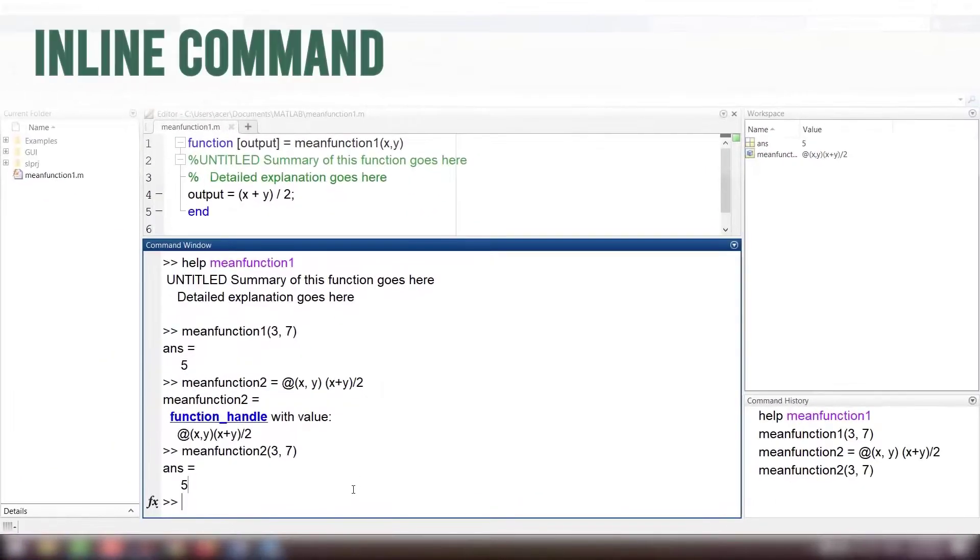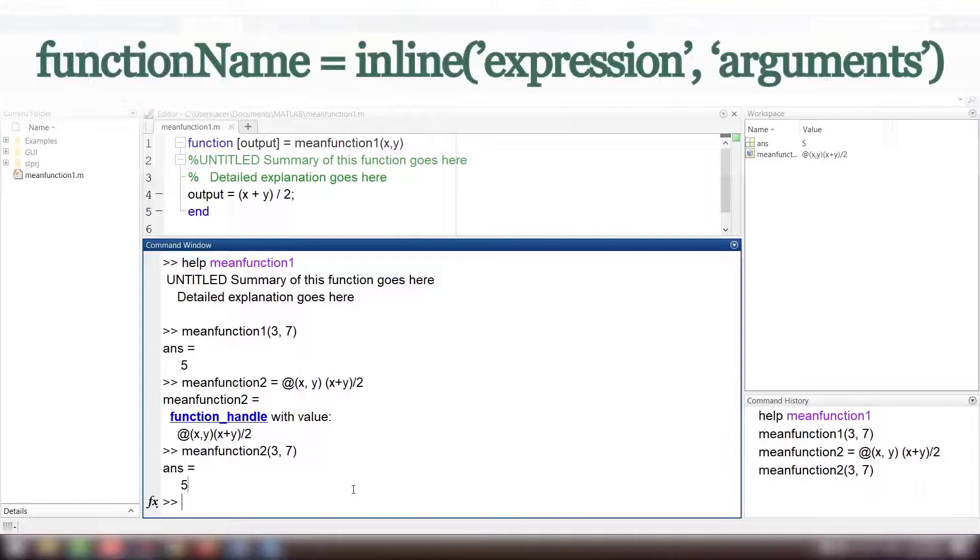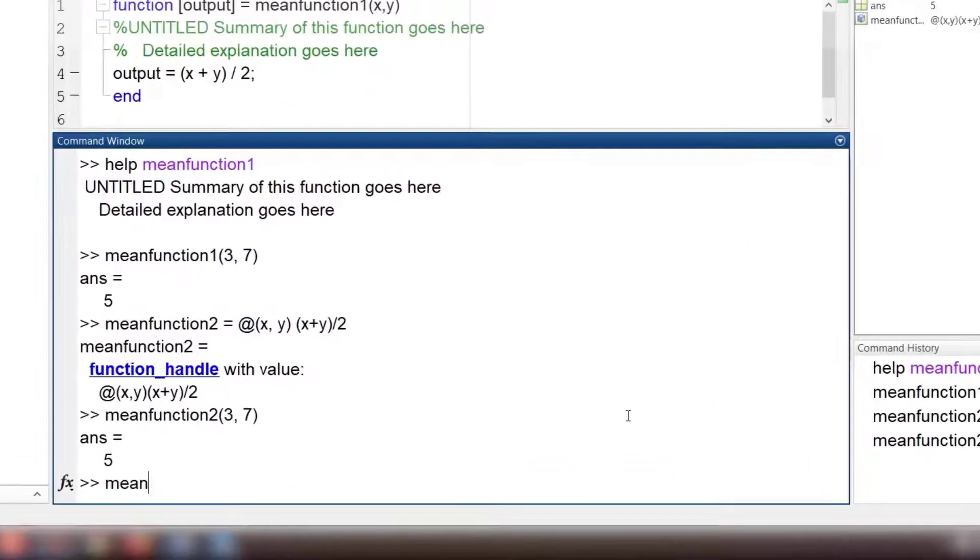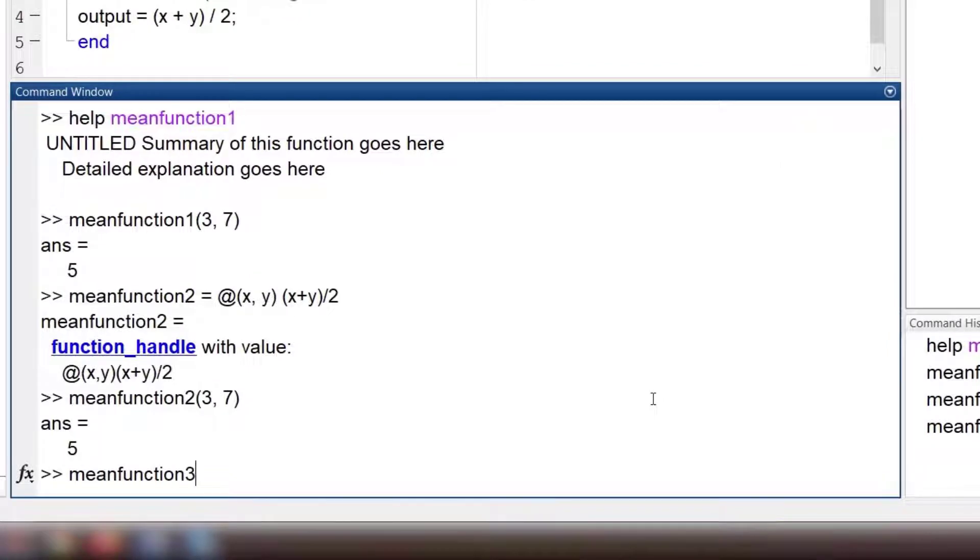The inline command: its syntax is functionName = inline('expression', 'argument1', 'argument2', 'argument3', etc.). So meanfunction3 = inline('(x+y)/2', 'x', 'y').